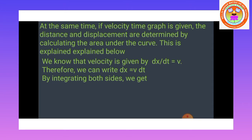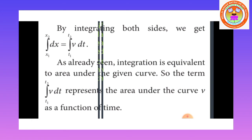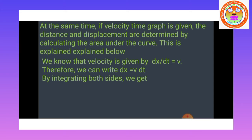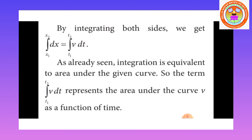We can calculate the displacement by integrating both sides. Integrating the left-hand side with respect to displacement x from x1 to x2, and the right-hand side with respect to time from t1 to t2, we get: integral from x1 to x2 of dx equals integral from t1 to t2 of v·dt. Since integration is equivalent to the area under the given curve, the term ∫(t1 to t2) v·dt represents the area under the curve of v as a function of time.